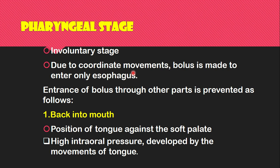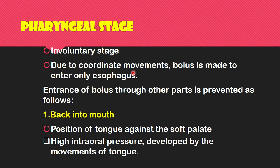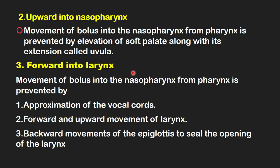In the pharyngeal stage, it is an involuntary stage. Due to coordinated movements, the bolus is made to enter only the esophagus; its entry through other parts is prevented as follows. The bolus is prevented from re-entering the mouth by the tongue positioning against the soft palate, and the high internal pressure developed by the movement of the tongue also resists food particles moving back to the mouth. Movement of the bolus into the nasopharynx is prevented by elevation of the soft palate along with the uvula, which prevents food from going upward into the nasopharynx.